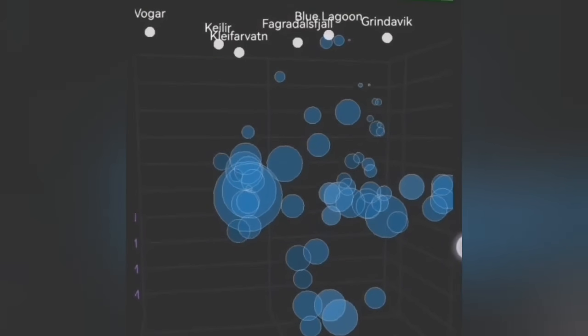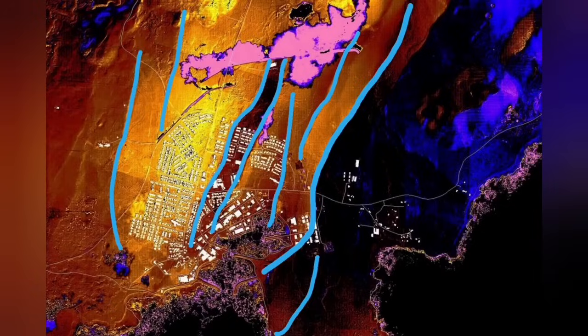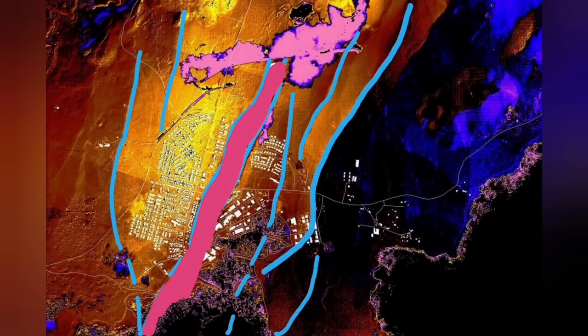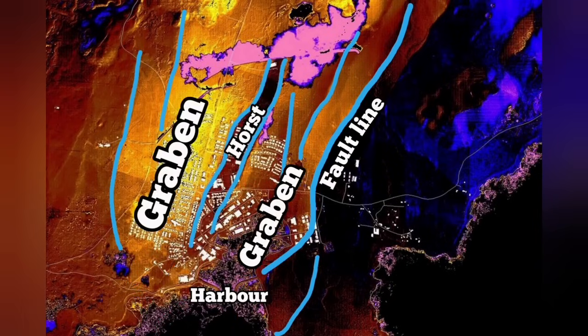In Hagafell and Sundhnúkur, we had eruptions. In November, we had the earthquake, then December eruption, and January again eruption. Through this graben that you can see in the middle part, and the fault lines, and the horst in the middle, we had cracks in Grindavik, but no eruption, magma was not there.